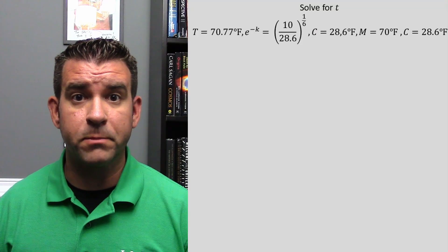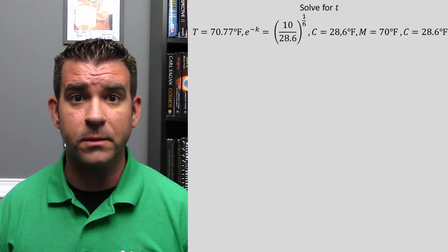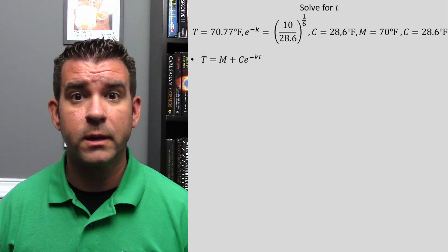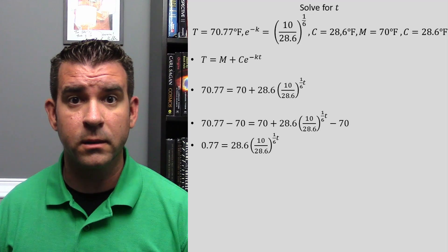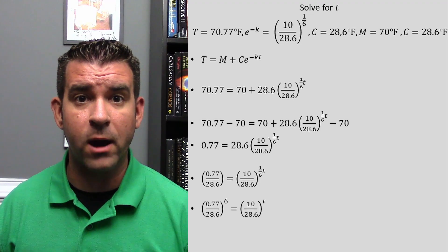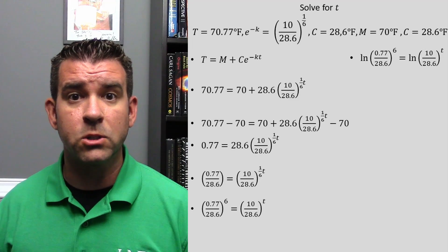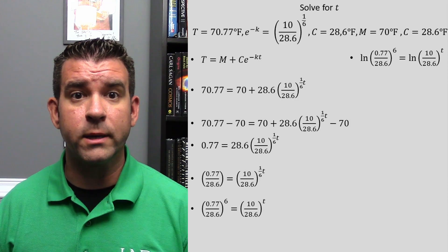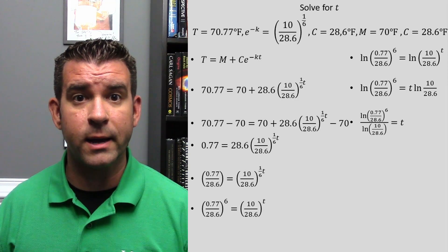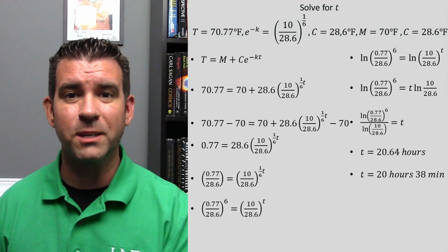We are almost there. Now we solve for time t, where our temperature capital T equals 70.77. We have solved for all other variables. Input all our numbers, do a little subtracting and dividing, raise everything to the sixth power. To bring T down, we take the natural log of both sides, and using natural log exponent rules, we bring down the T, divide both sides, and solve for T. Grab a TI-89 Titanium Edition calculator, plug it in, and we get a time of 20.64 hours, or 20 hours and 38 minutes.